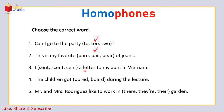Number 3: 'I sent a letter to my aunt in Vietnam।' यहाँ sent, scent, cent तीनों homophones हैं। Correct word होगा sent — जो send का past है, send means भेजना, sent means भेजा। Number 4: 'The children got bored during the lecture।' यहाँ bored और board दोनों homophones हैं, sounds same हैं लेकिन spellings और meanings different हैं। Correct word होगा B-O-R-E-D, bored।